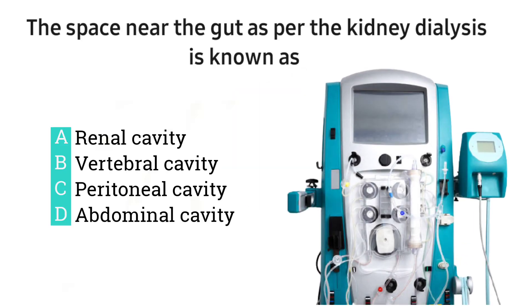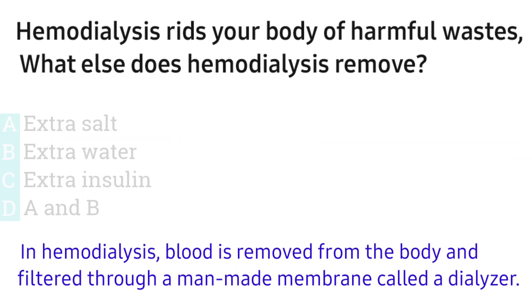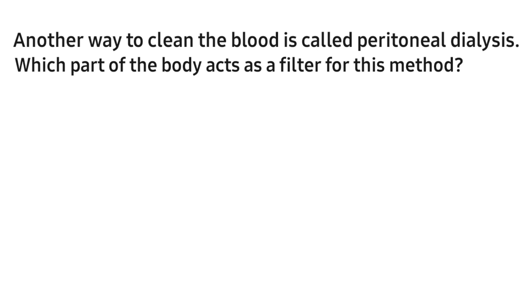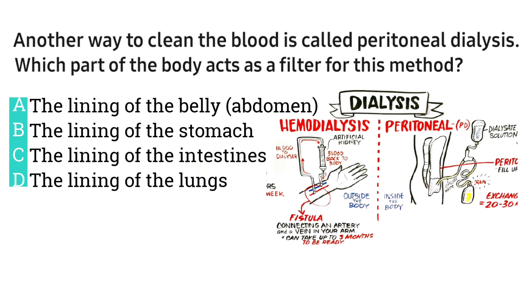Question number three: the space near the gut as per kidney dialysis is known as — the right answer is option C. Question number four: hemodialysis removes harmful waste from the body; what else does hemodialysis remove — the right option is D.